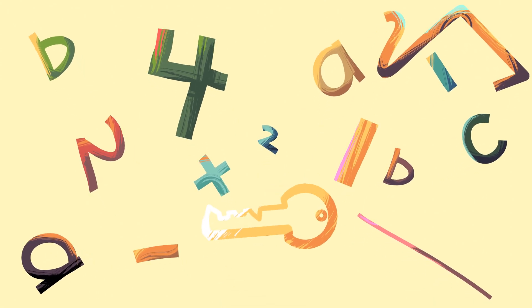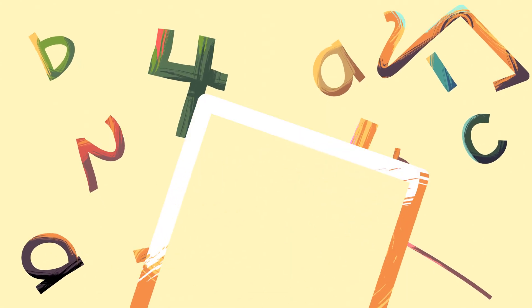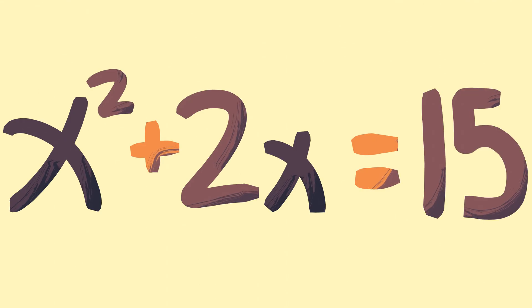The key to understanding it is the humble square. Say you're given this equation to solve: x squared plus 2x equals 15.